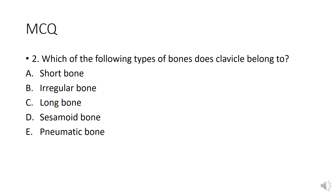The second MCQ is: which of the following types of bones does the clavicle belong to? Here the morphological types of bones are given and you have to identify the morphological classification of the clavicle. Option A is short bones, B is irregular bone, C is long bone, D is sesamoid bone, and E is pneumatic bone.